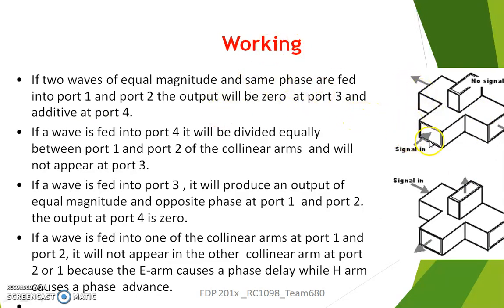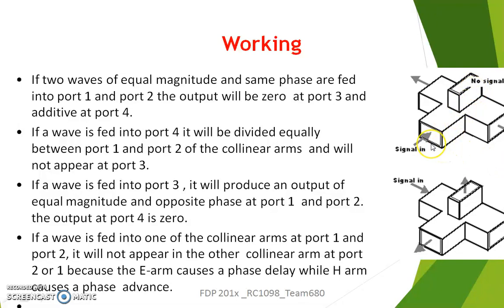Apart from E-plane T and H-plane T, a Magic T has four ports. If two waves of equal magnitude and same phase are fed to port 1 and port 2, the output will be 0 at port 3 and additive at port 4. Similarly, if a wave is fed into port 4, it will be divided equally between port 1 and port 2 — the collinear arms — and no output will appear at port 3. If a wave is fed into port 3, it will produce an output of equal magnitude at port 1 and port 2 but zero output at port 4, since port 3 and port 4 are isolated from each other.